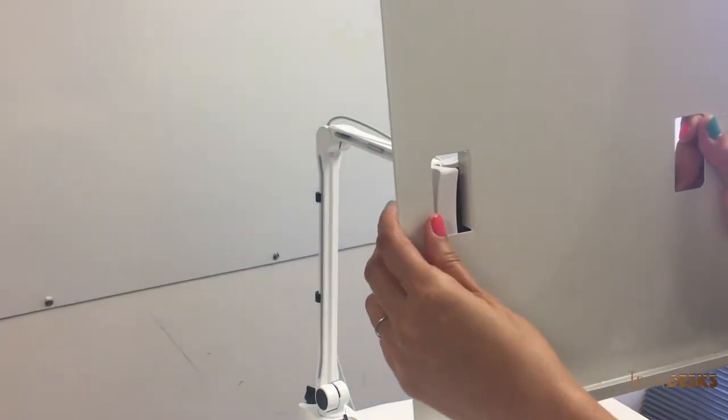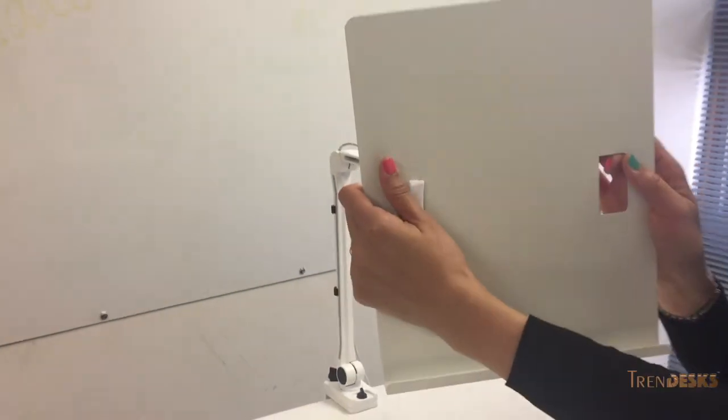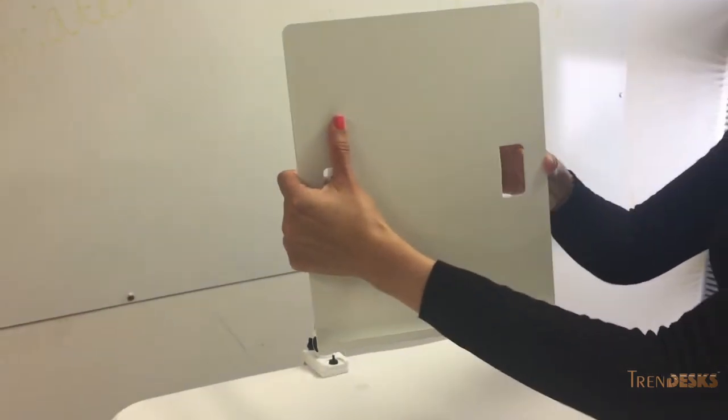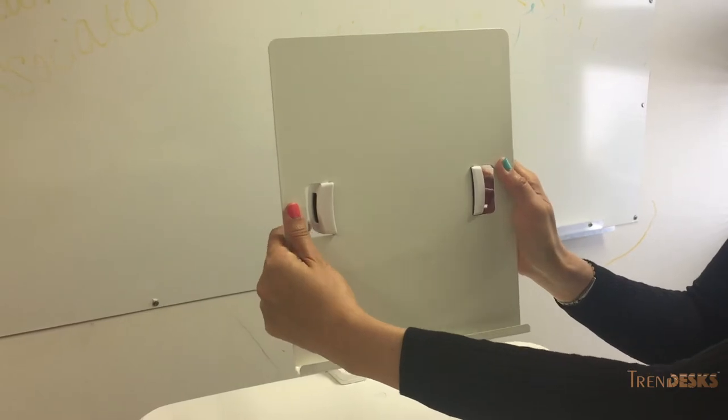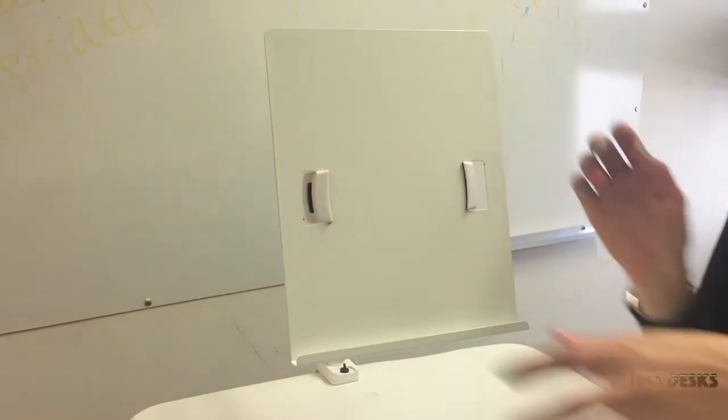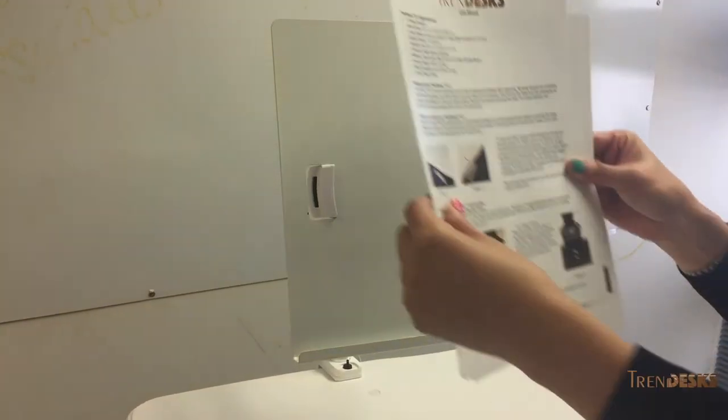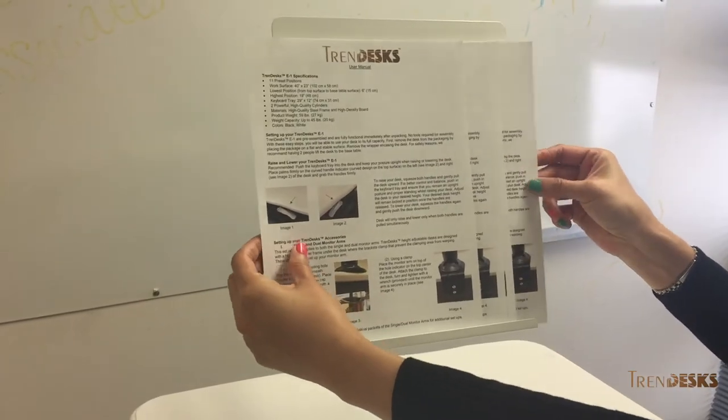The cell tablet holder can also be converted into a document stand panel. The document stand panel is an additional accessory provided by Trenddesk. This will help you read documents at eye level and lets you put manuscripts easily.